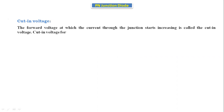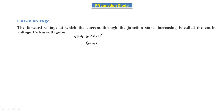Let's review some definitions. Cut-in voltage: the forward voltage at which the current through the junction starts increasing is called the cut-in voltage — that is, the voltage where the diode starts conducting. It is indicated by V-gamma: 0.7 V for silicon and 0.3 V for germanium.